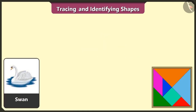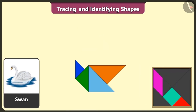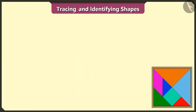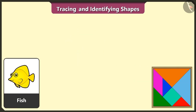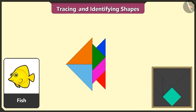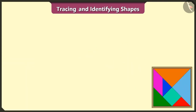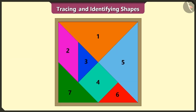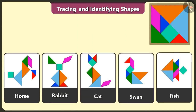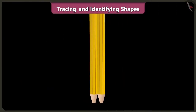Now, we will make a swan using 4 triangles, 1 square, 1 quadrilateral and 1 triangle. Swan is also ready. This is really interesting. This is a fish. Let's try and create a fish using 2 triangles, 1 quadrilateral and 1 triangle, 2 more triangles and 1 square, and we have created a fish. We have finally created a horse, rabbit, cat, swan and a fish using the 7 shapes of the tangram.